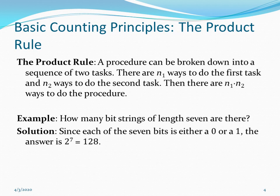The product rule states that if you have a procedure that can be broken down into a sequence of two tasks, if there are N1 ways to do the first task and N2 ways to do the second task, then there are N1 times N2 ways to do the procedure. Many of those rules may not be very clear just from reading them, but an example for each rule will make it clear how to apply and use the rule.